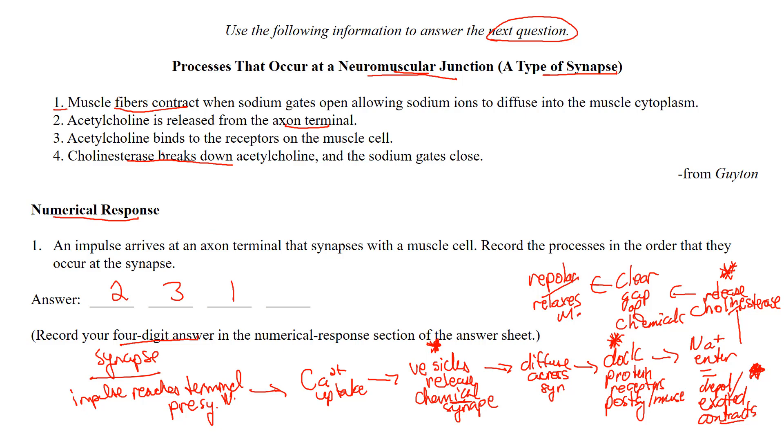Of course that would be number four. So your four-digit answer in the correct sequence would be two, three, one, four. That would list all the different events that they provide in this particular example of synapse. Synapse - how we're trying to get that wave of depolarization from a presynaptic neuron to get that muscle contracted in this case.